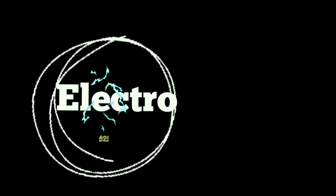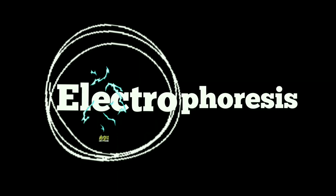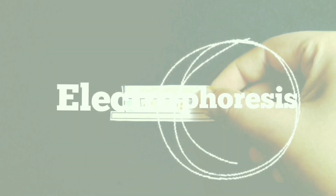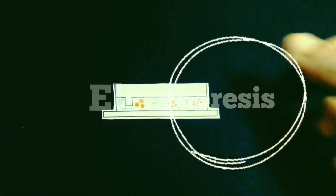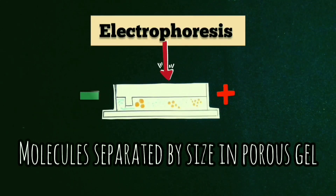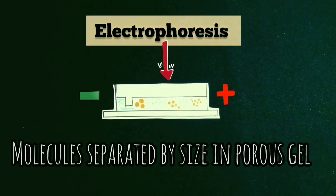First, let's dissect the term. 'Electro' refers to the energy of electricity, and 'phoresis' from the Greek verb 'phores' means to carry across. This gives us the direct definition of electrophoresis: it is an analytical tool that allows biochemists to examine the differential movement of charged molecules in an electric field.